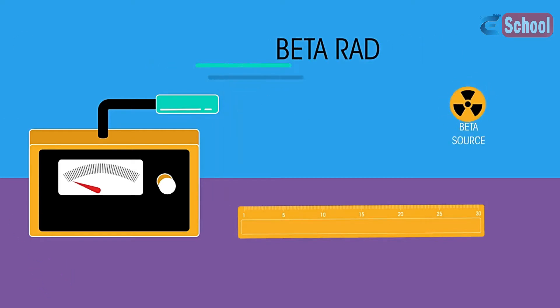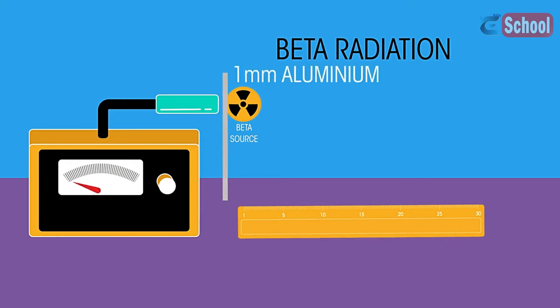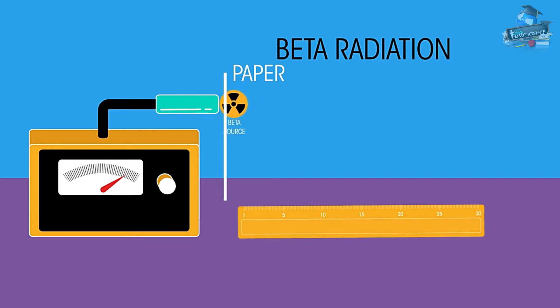Now for beta radiation. The addition of paper stops some of the beta particles being detected and the addition of 1mm aluminium sheet stops all of the beta particles. We can see that beta particles have good penetration in air and thin paper but can be stopped by thin metal.